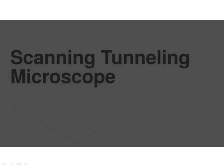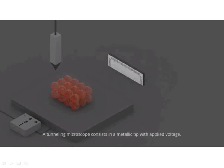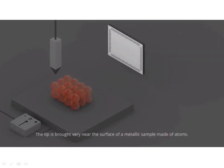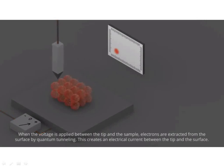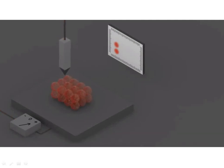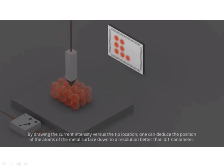A tunneling microscope consists of a metallic tip with applied voltage. The tip is brought very near the surface of a metallic sample made of atoms. When the voltage is applied between the tip and the sample, electrons are extracted from the surface by quantum tunneling, creating an electrical current between the tip and the surface. Tunneling occurs only at very short distances, when the tip lies on top of an atom. By mapping the current intensity across the tip location, one can deduce the position of the atoms of the metal surface down to a resolution better than 0.1 nm.